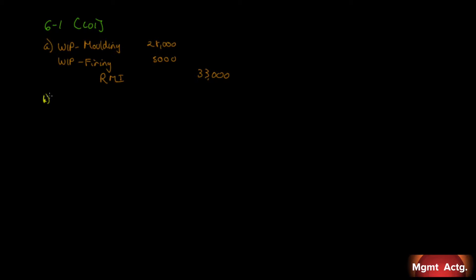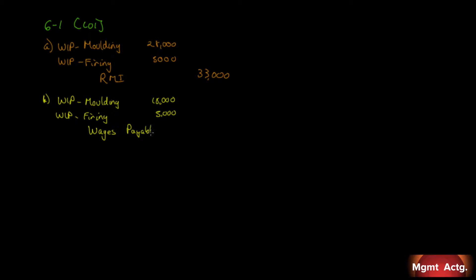Transaction B: Direct labor costs were incurred. Molding department: $18,000. Firing department: $5,000. So we're increasing work in process — molding by $18,000 and firing by $5,000. Just like in job cost, this can't hit the income statement; it must be a balance sheet account. So we don't put wages expense — we put wages payable, creating a liability for $23,000.